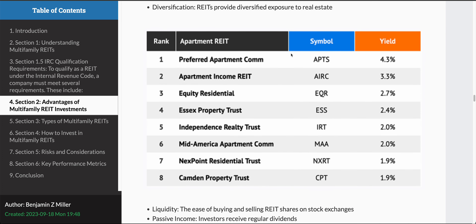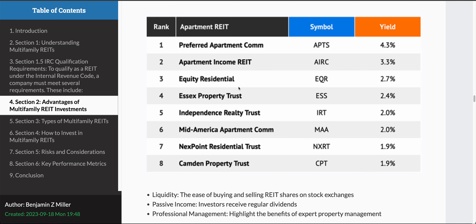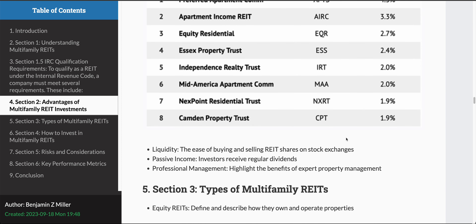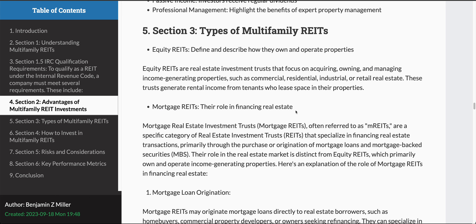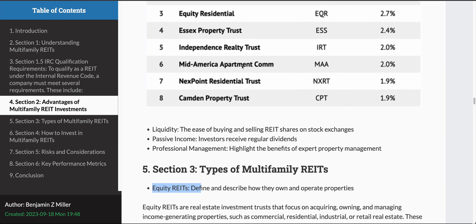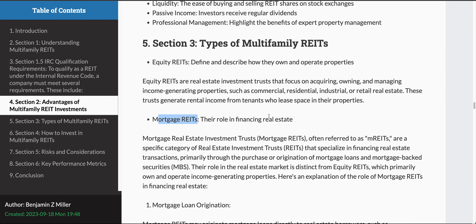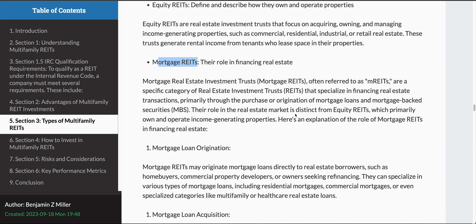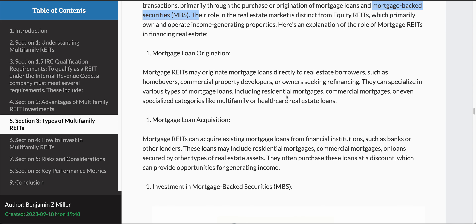Here are some examples of multifamily REIT investments — large companies like Equity Residential and Independence Realty Trust, which offer liquidity, passive income, and professional management, and have stock symbols you can trade. There are different types of REITs; these are examples of equity REITs. Another category is mortgage REITs, which are actually involved in the financing of the acquisition of real estate, including mortgage-backed securities, mortgage loan origination, and mortgage loan acquisition.